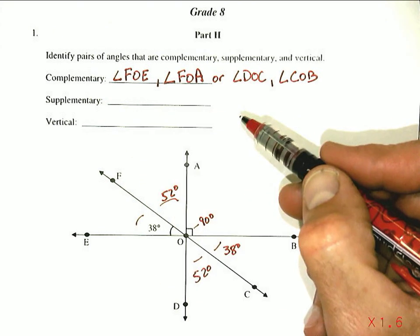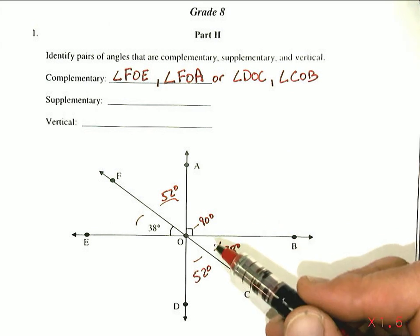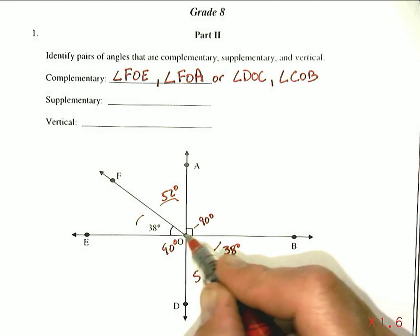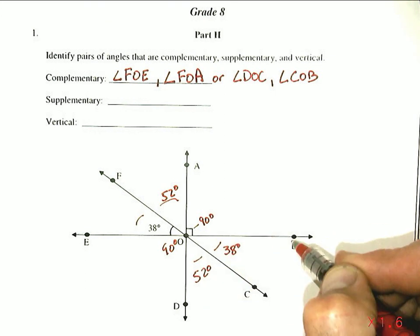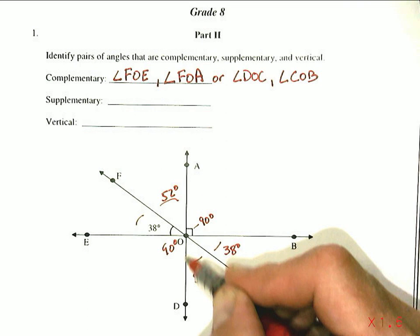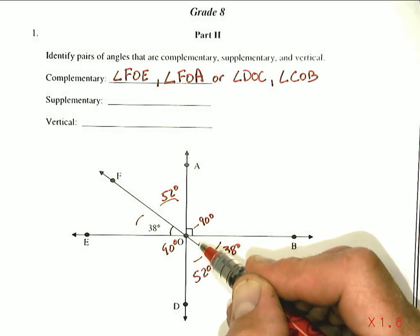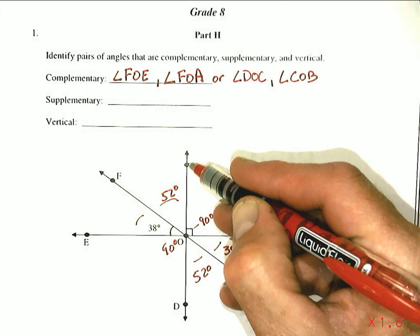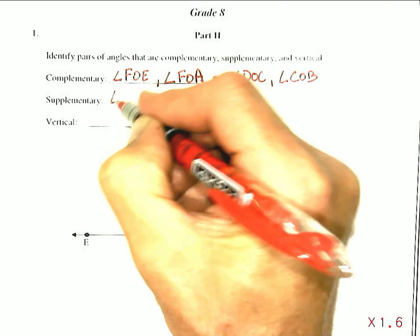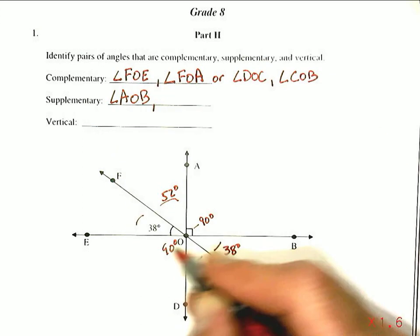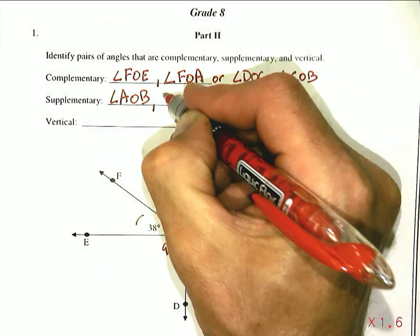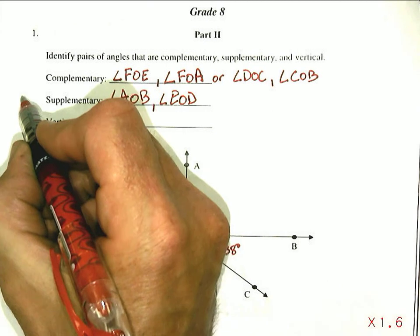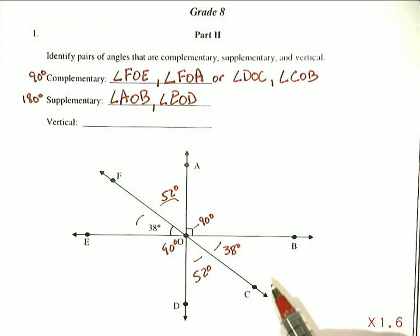Supplementary angles are angles that add up to 180 degrees, and you don't always have to have just a pair of angles to do that — there are a number of angles here we can use. AOB is 90 degrees, so EOD is also 90 degrees, and they're vertical angles. So we have a whole bunch of angles we could list for supplementary angles. For example, angle AOB and angle EOD are supplementary — together they add up to 180 degrees.